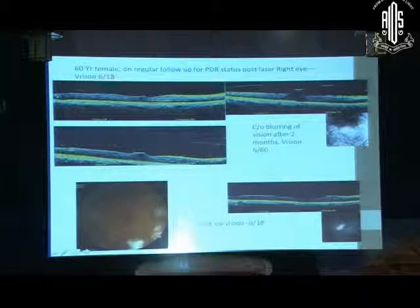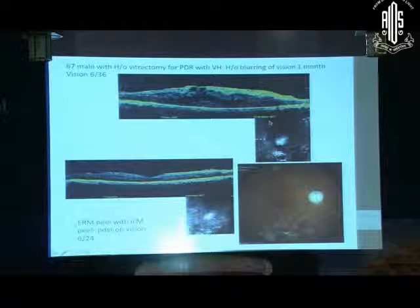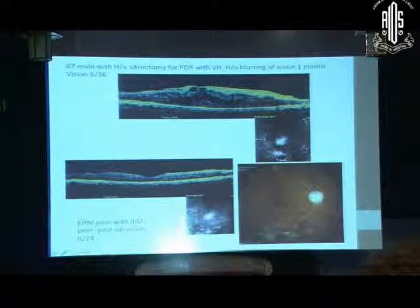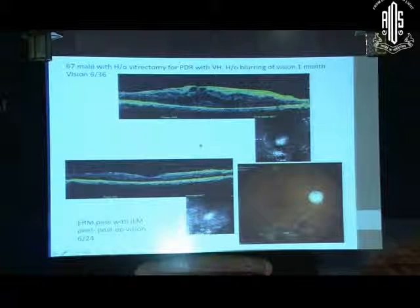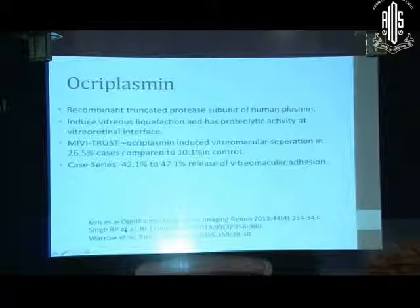This is another patient showing vitromacular traction which increased over time. Another interesting situation: a patient who had a vitrectomy for PDR with vitreoschisis came with blurring of vision due to an epiretinal membrane, which occurs very commonly in diabetics. That is the reason why you need to peel the ILM whenever there is an epiretinal membrane. This is the post-surgical outcome with improvement in vision.